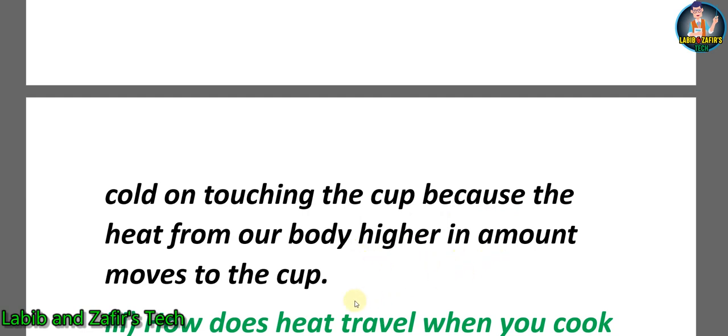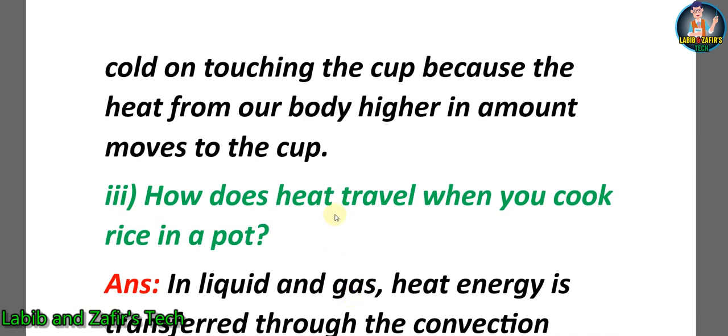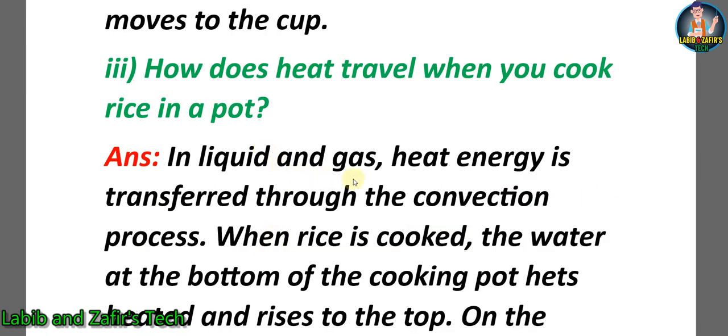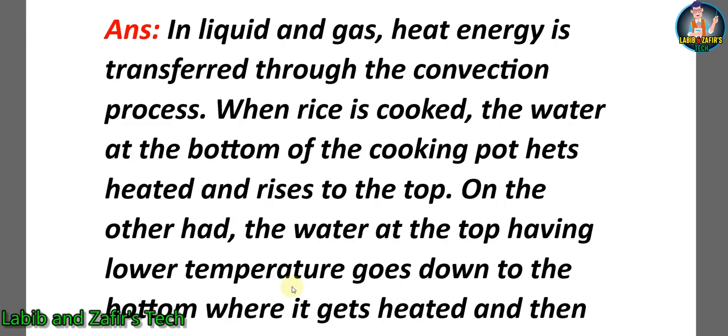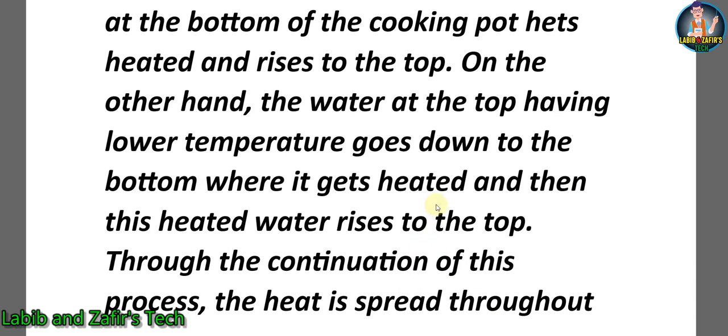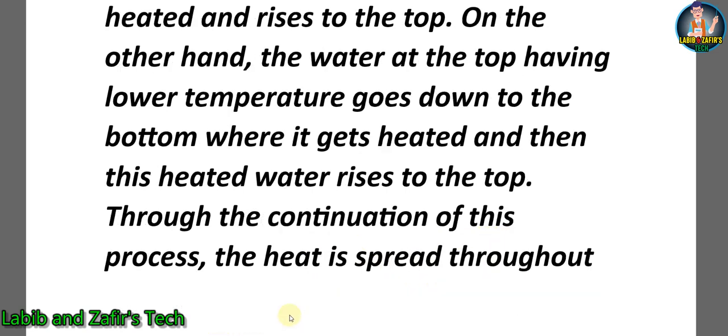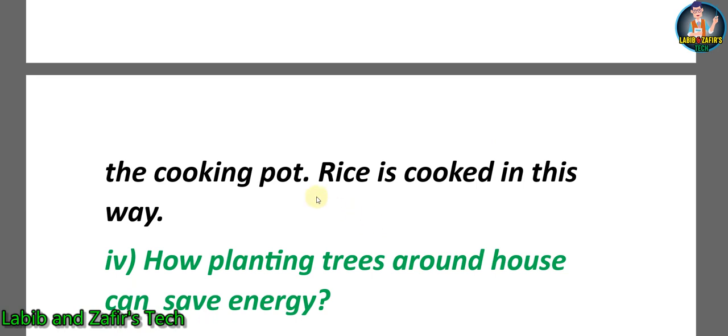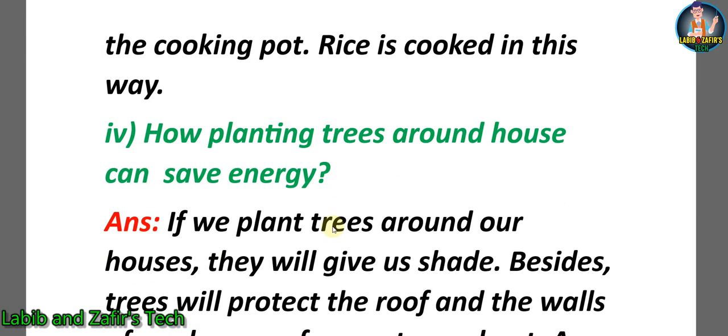Third question: how does heat travel when you cook rice in a pot? Answer: in liquid and gas, heat energy is transferred by the convection process. When rice is cooked, the water at the bottom of the cooking pot gets heated and rises to the top. On the other hand, the water at the top, having lower temperature, goes down to the bottom where it gets heated. Then this heated water rises to the top. Through the continuation of this process, the heat is spread throughout the cooking pot. Rice is cooked in this way.